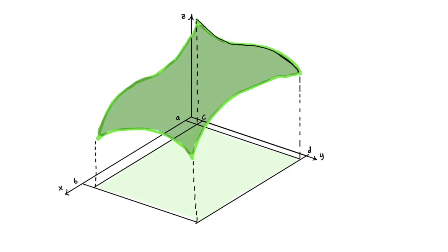When we integrate this function over this rectangular domain, what we hope to compute is this solid block of volume enclosed between the graph of the function and the rectangle. I'm graphing the function as if it were positive, so everything we're looking at is positive volume, but of course if the function dipped below the xy-plane we would have some negative volume.